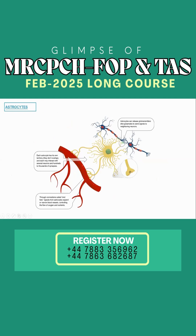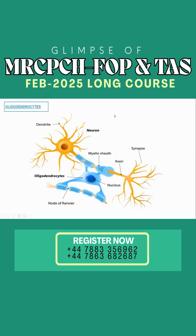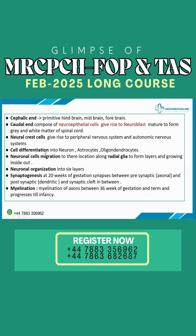Astrocytes support neurons by attaching them to blood vessels and providing nutrients and blood supply. Oligodendrocytes are present between two neurons, supporting them and attaching to the myelin sheath of each axon. You do not need to know these cells in detail — their functions are not specifically asked in the exam; this is just an overview.